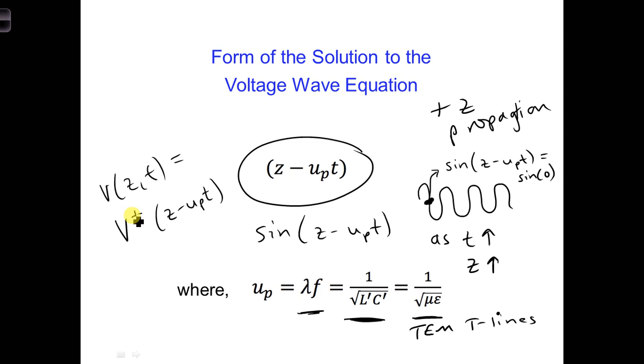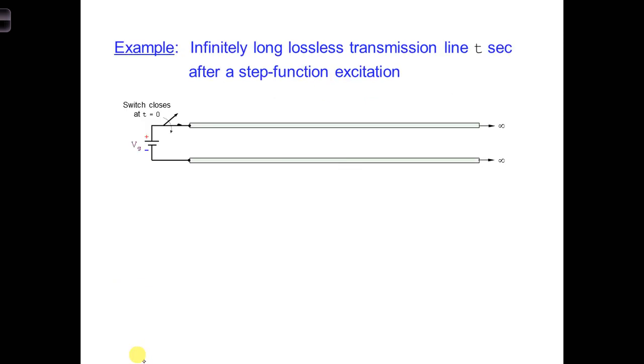V+ might be a step function, a sinusoid, a Gaussian, and so forth. Let's consider a specific example, where the switch in the cockpit of the airplane just connects a constant voltage source, say a battery, a battery of voltage VG, to a lossless transmission line.